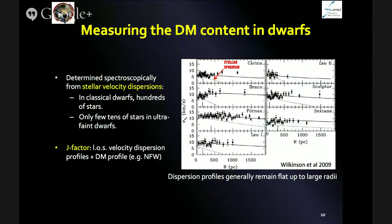To measure the dark matter content in the dwarfs, you need to determine the stellar velocity dispersion using spectroscopy. For classical dwarfs this means you typically have hundreds of stars with good spectroscopic measurements, so you can infer the underlying dark matter distribution in a quite precise way. But in the case of ultra-faint dwarf galaxies recently discovered by Sloan or other surveys, you only have typically a few tens of stars. That gives you a big uncertainty in the dark matter density profile parameters that fit the data. For the old classic dwarfs you have plenty of information compared to the ultra-faint dwarfs.